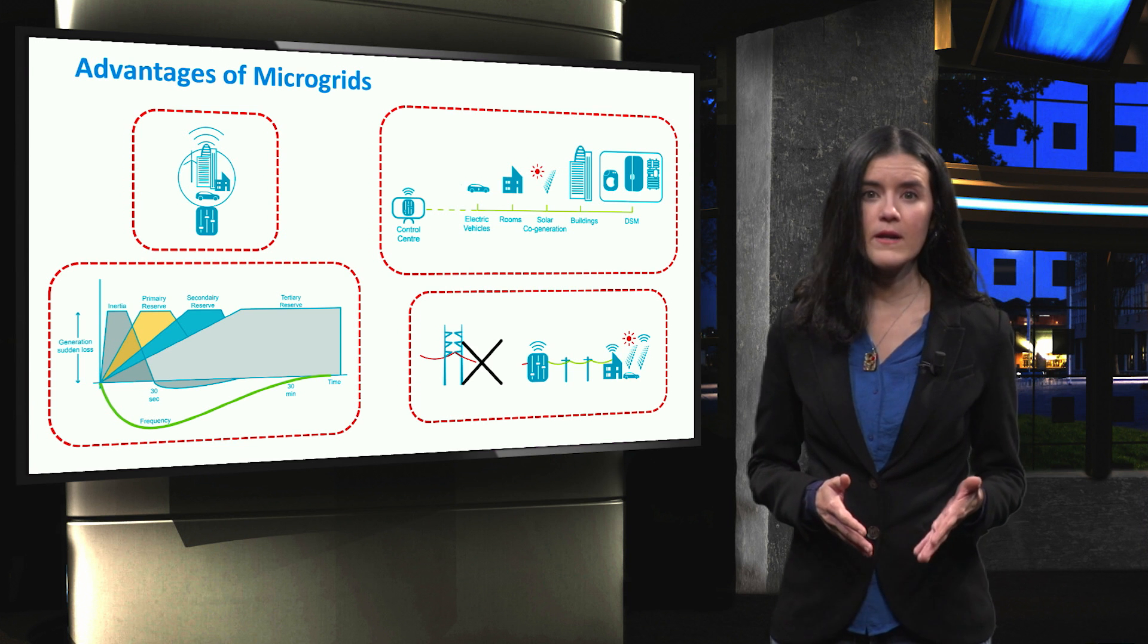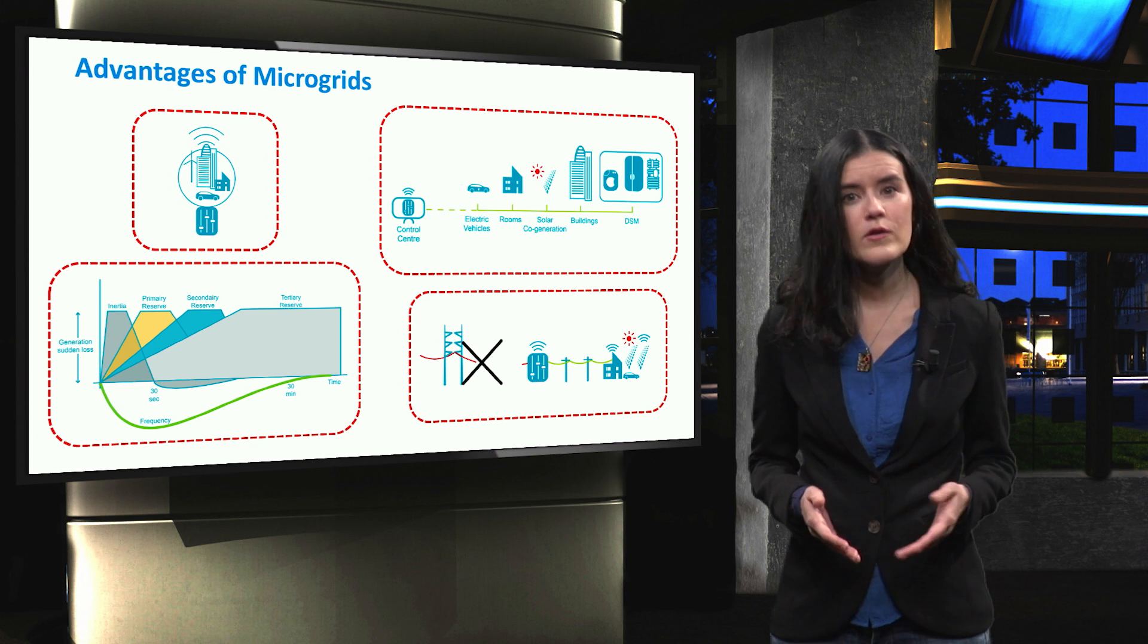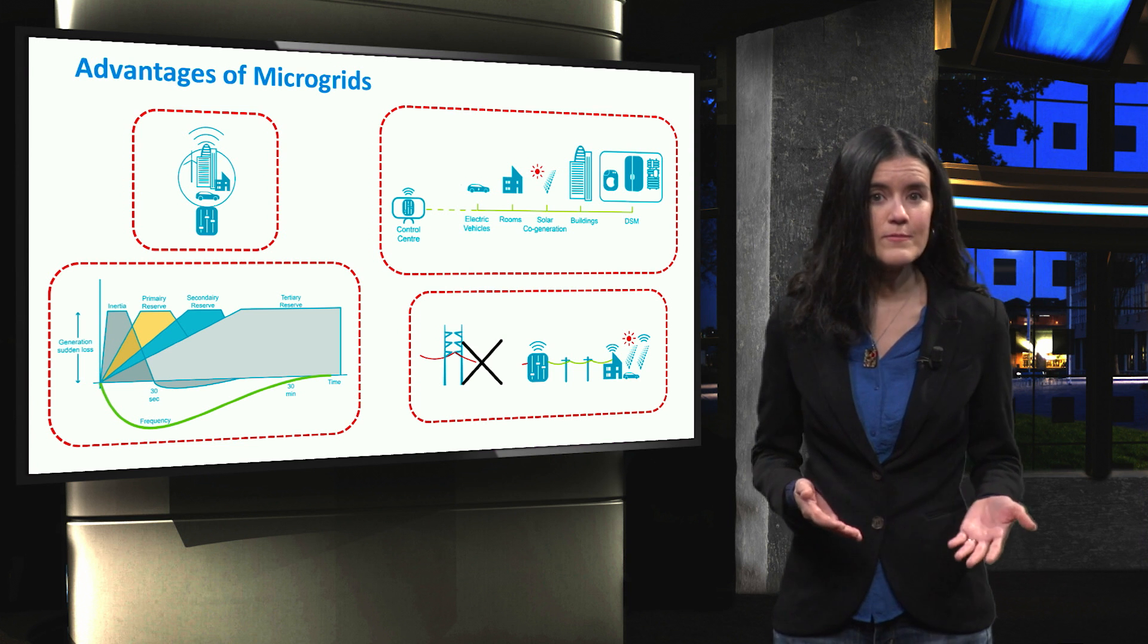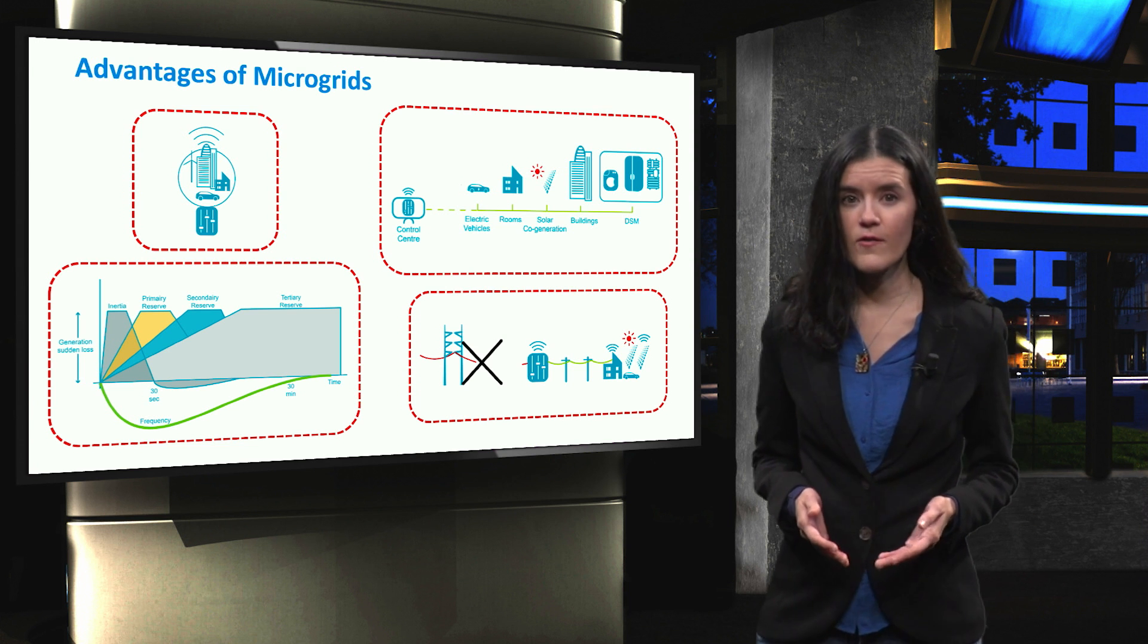Microgrids can be operated in islanded mode, particularly during faults at upstream electrical network. This may lead to higher reliability and higher continuity of supply.